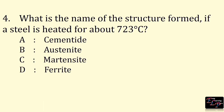Next question: what is the name of the structure formed if steel is heated to about 723 degrees Celsius? When steel is heated to 723 degrees Celsius, a dense fluid is formed which is called austenite.